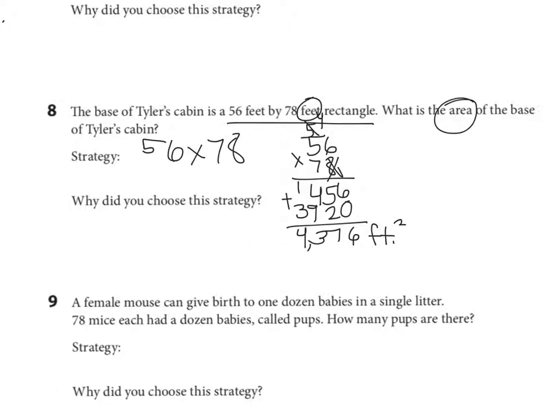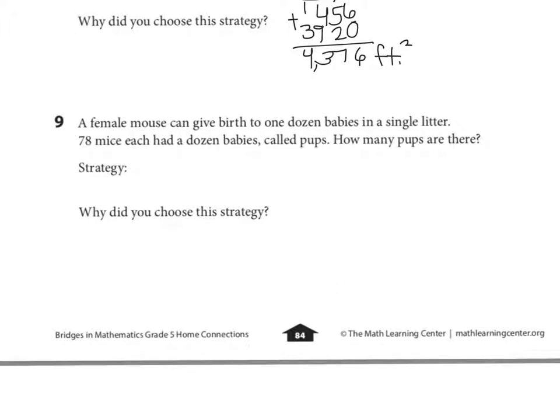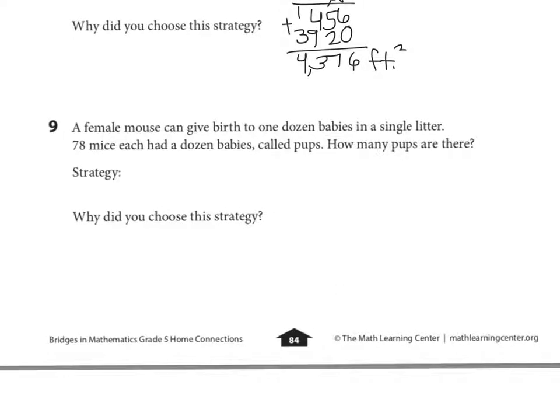Let's go now to number 9. A female mouse can give birth to one dozen babies in a single litter. 78 mice each had a dozen babies called pups. How many pups are there? So I would need to think how many is in a dozen. If you think about buying eggs at the grocery store, how many come in a dozen eggs? That's right, 12. So I'm trying to solve 78 times 12.